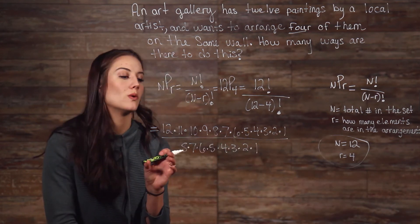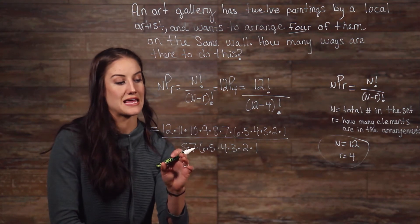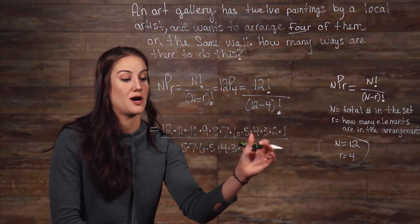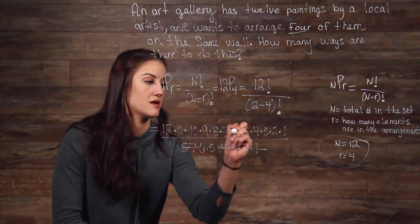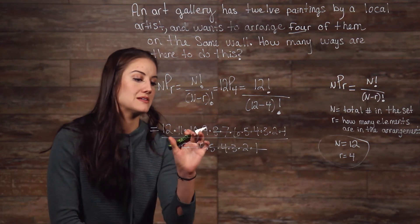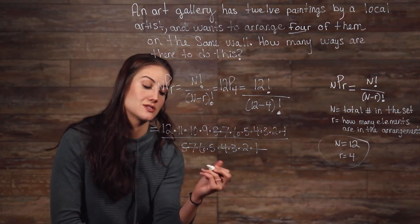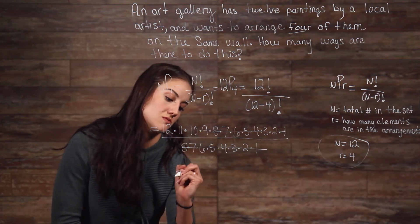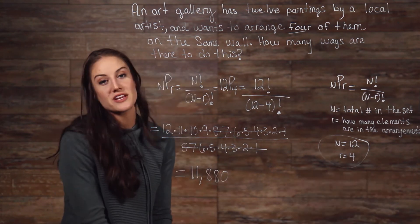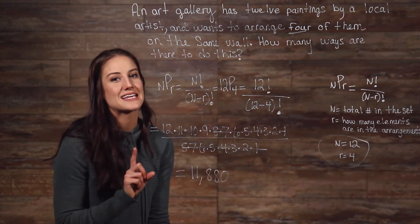Now, once we write it all out, we can see that our 8 through 1 on the bottom and the top can cancel out with one another. And we are left with 12 times 11 times 10 times 9.